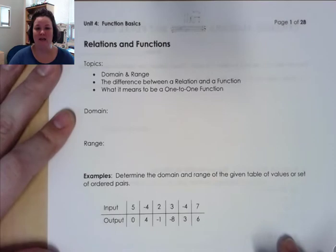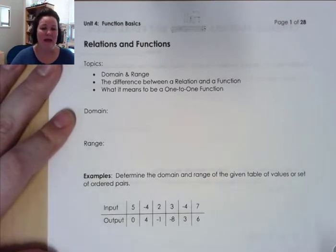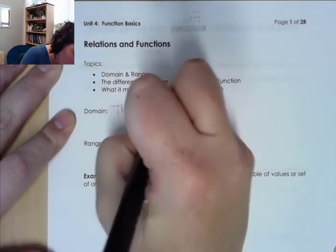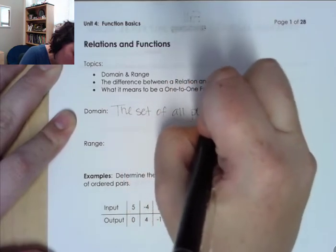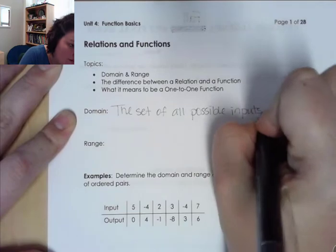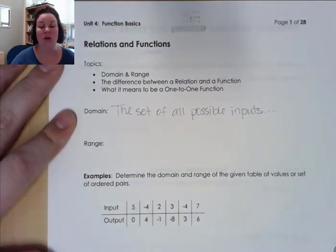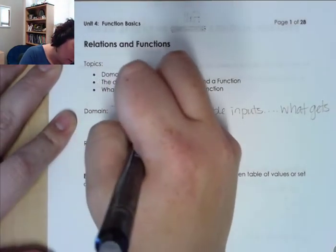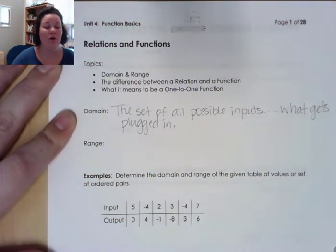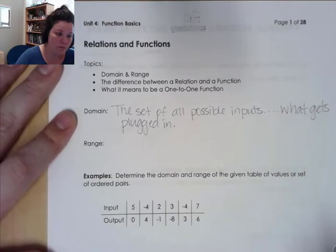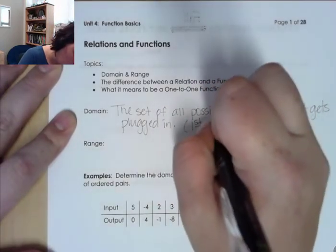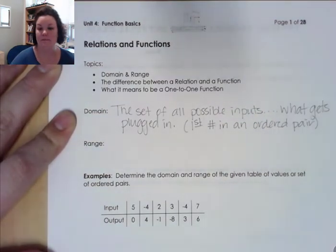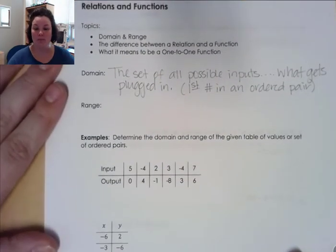Starting off, we first need to know what the domain and the range is of any relation. The domain is the set of all possible inputs — basically, what gets plugged in, or you can think of it as the first number in an ordered pair.